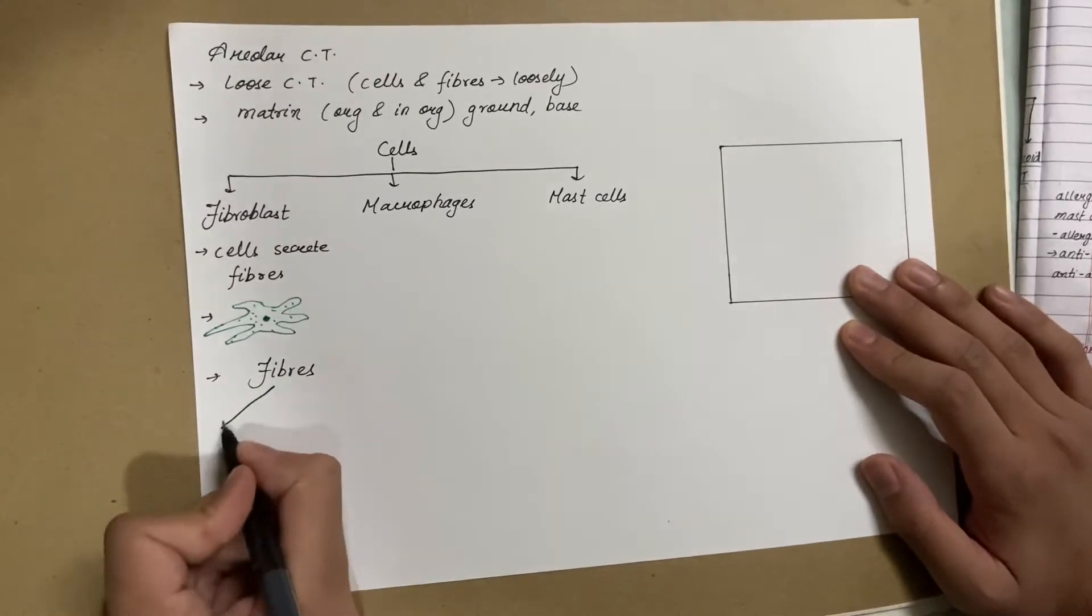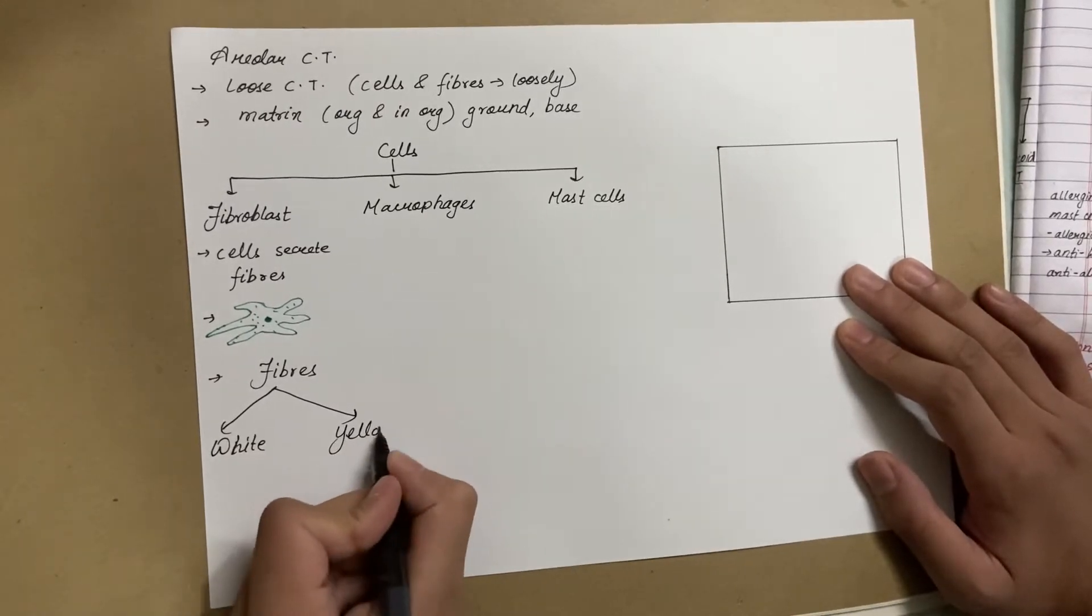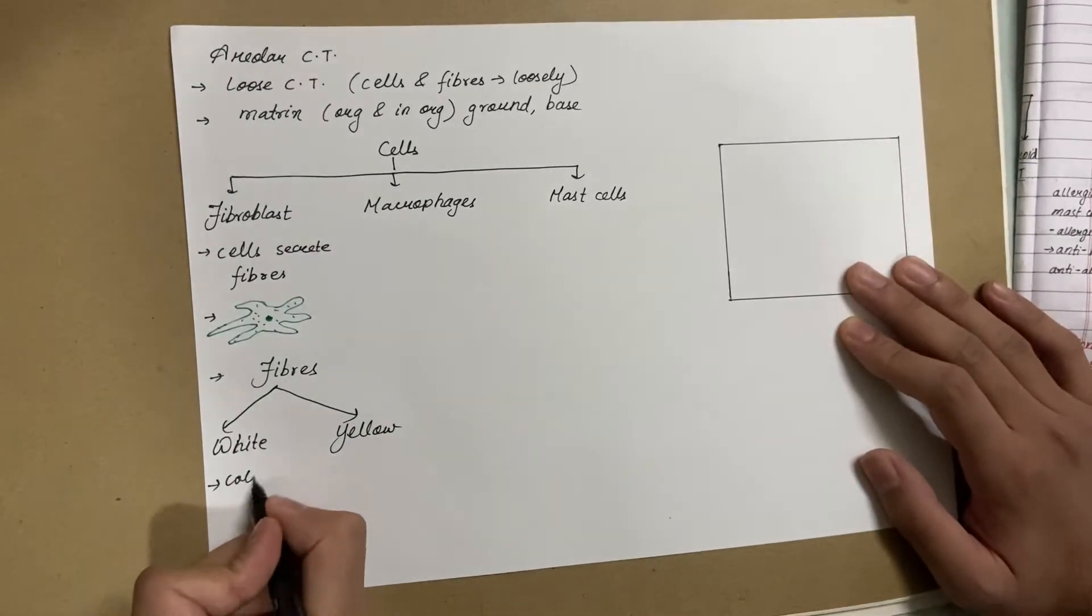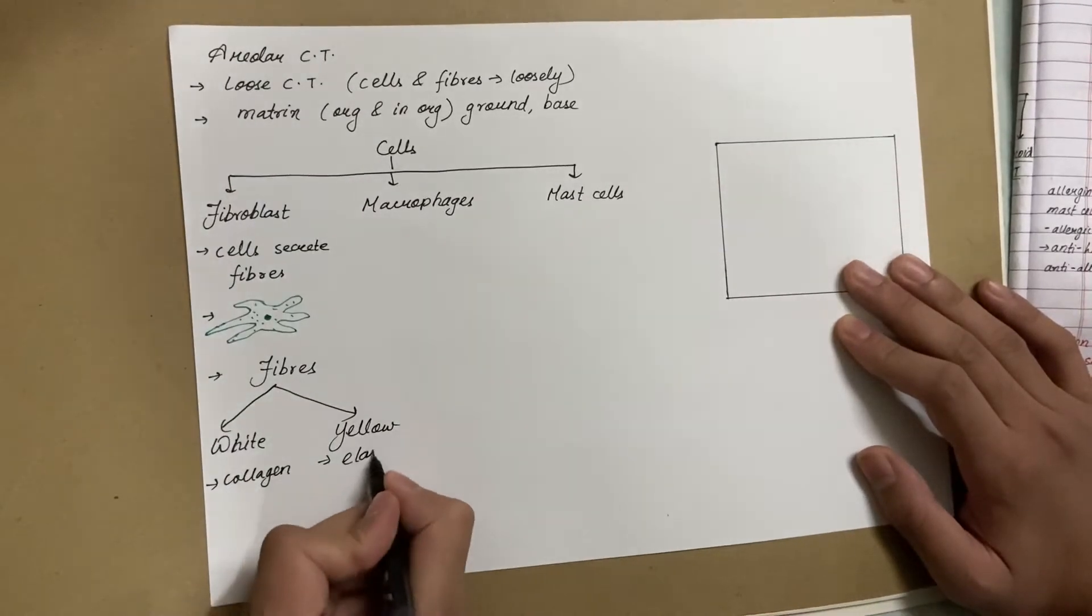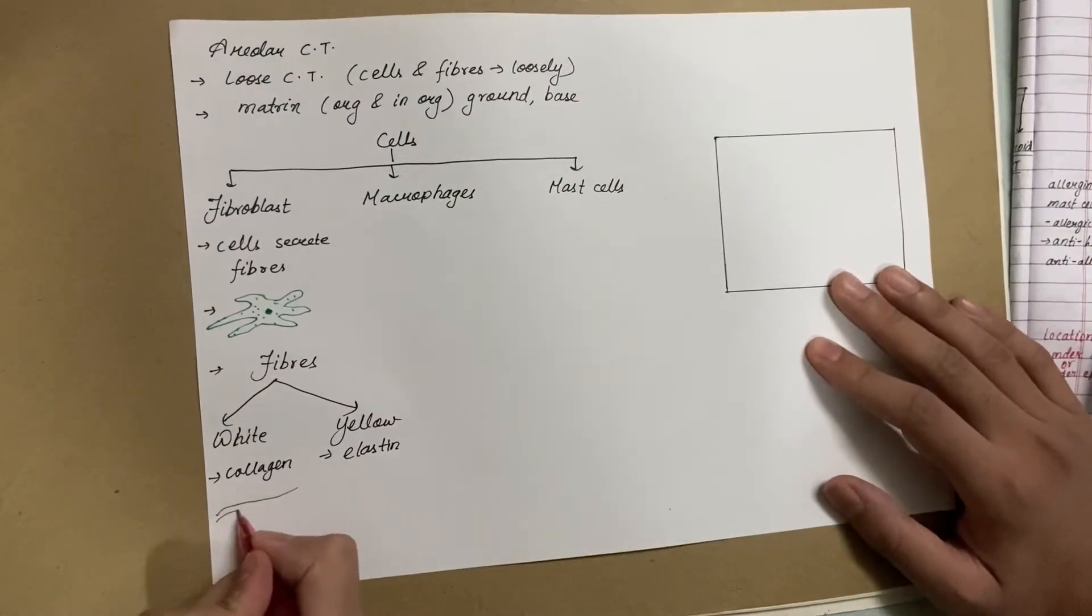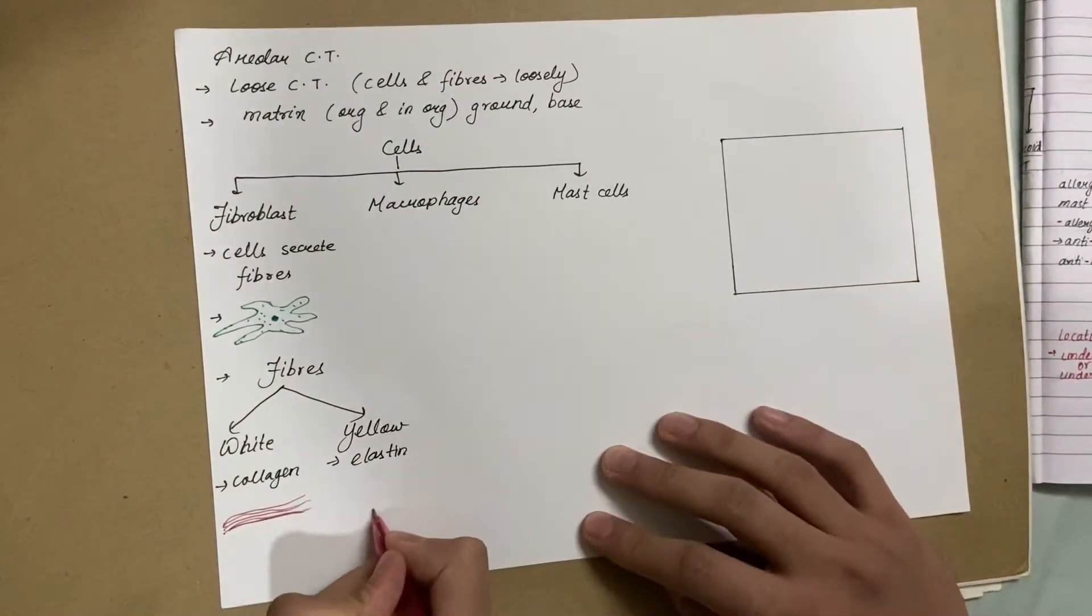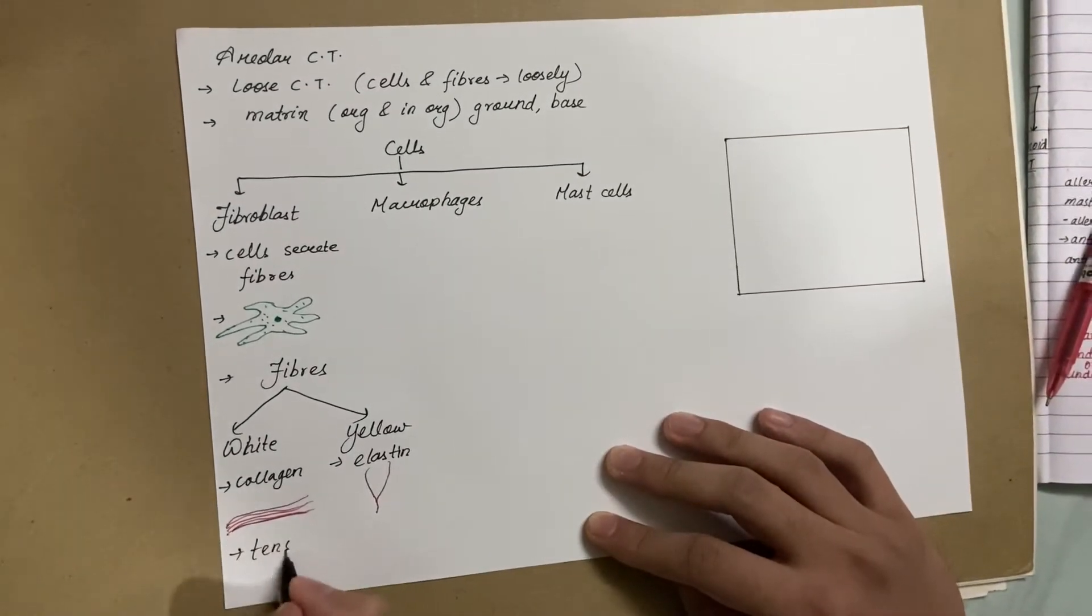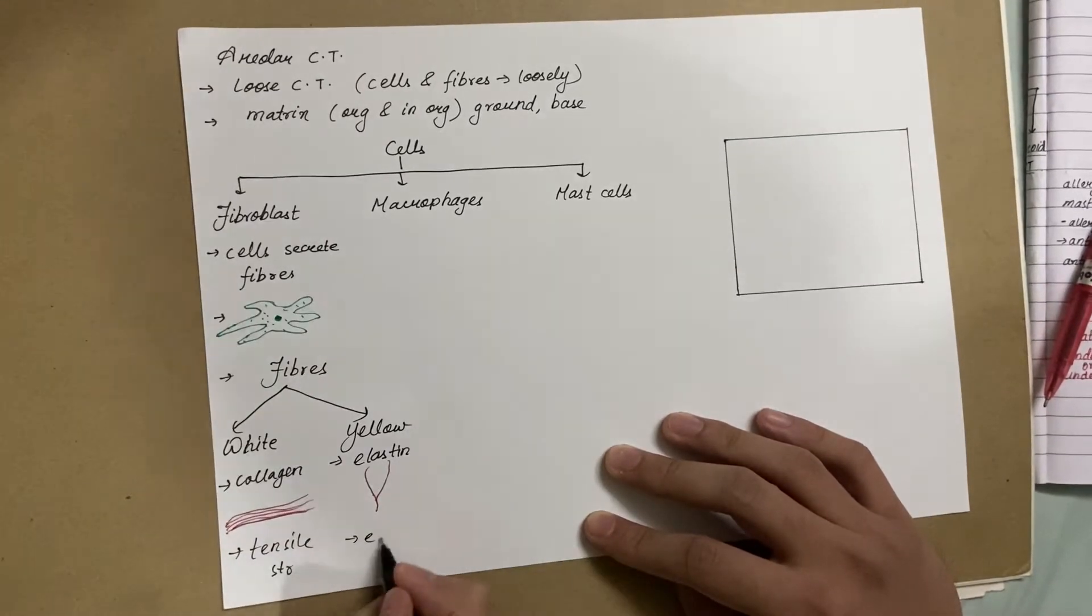These fibers can be of two types: white fibers or yellow fibers. White fiber is white due to the presence of protein collagen, and yellow fiber is yellow due to the presence of protein elastin. White fiber is always found in bundles and unbranched, while yellow fiber is found singly and branched. White fiber provides tensile strength and yellow fiber provides elasticity.